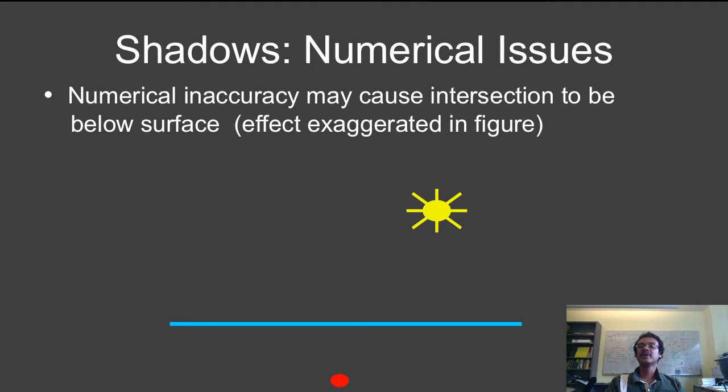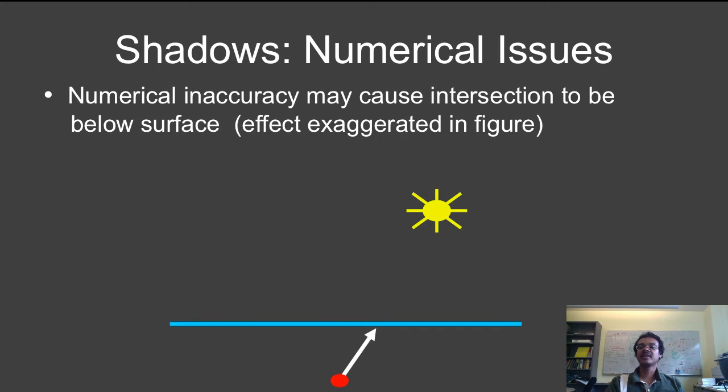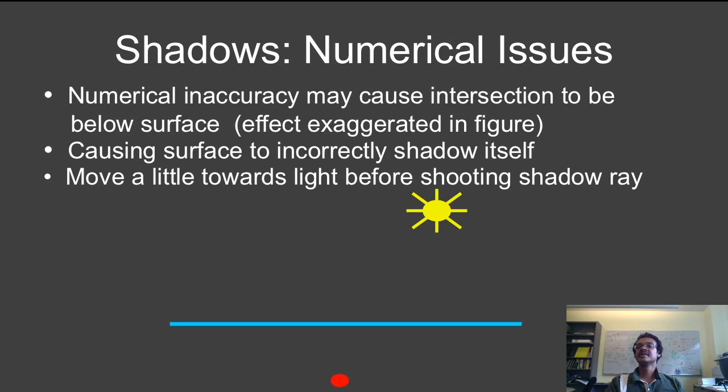Now, I shoot a ray towards the light source, and I incorrectly say my surface shadows itself. The solution to this is to move a little bit towards the light source before shooting a ray, or otherwise allow a small epsilon tolerance, where you don't consider intersections.